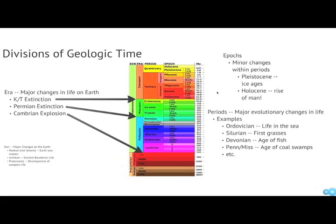We talk about eras more than we talk about eons. Eras are major changes in life on earth. The end of the Paleozoic era comes with the Permo-Triassic extinction, and the end of the Mesozoic era — the era in which the dinosaurs lived — comes with the KT, or Cretaceous-Tertiary, extinction.